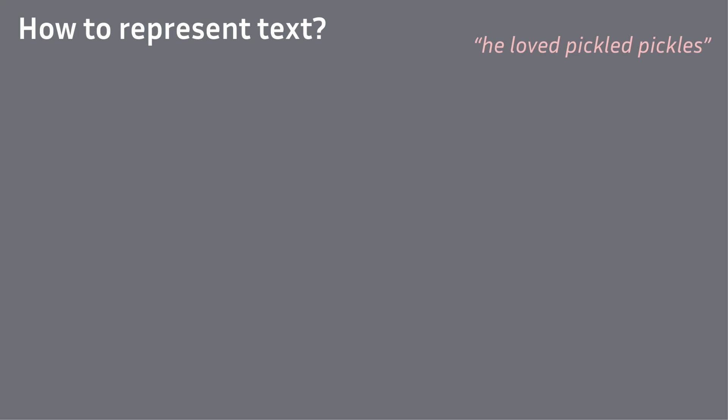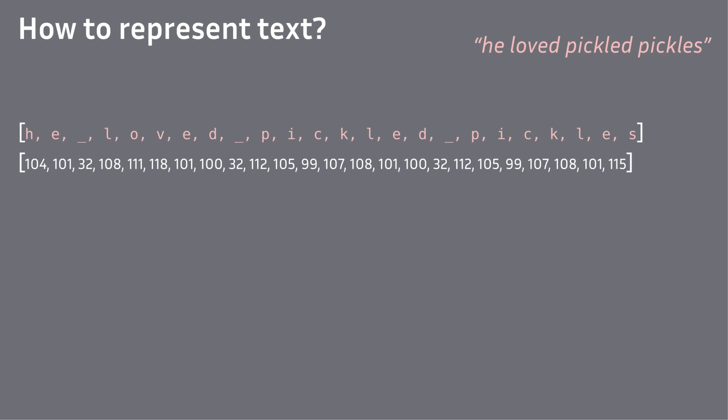How do we represent text in a computer? A text editor might represent each letter individually, and we might take that representation to our sequence NLP models — for example, with one-hot encoding or embedding, representing each letter individually.